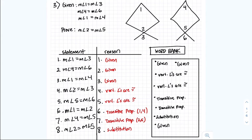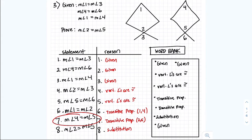Looking at step 7: measurement angle 4 equals measurement angle 6, and measurement angle 5 equals measurement angle 6. Since 4 is equal to 6 and 5 is equal to 6 as well, we can say 4 is equal to 5 because of the transitive property using lines 2 and 5.